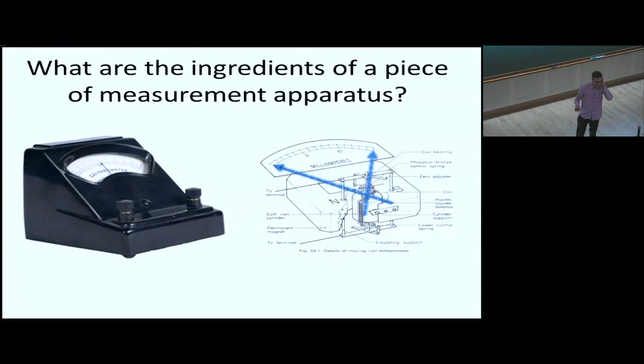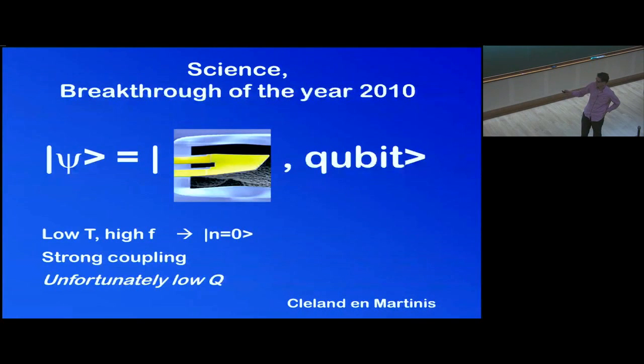And the question is, what is special about a piece of measurement equipment? Is it because it's large? Is it because the displacements are much larger than in this Martinez experiment? Here the displacements are really very small.